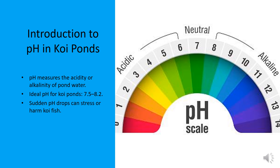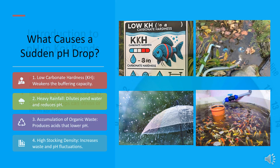Let's explore why pH drops happen and how to prevent them. Several factors can lead to sudden pH drops, including heavy rainfall, excess organic waste, and low buffering capacity. Understanding the cause is the first step to fixing the problem and maintaining a healthy environment for your koi.